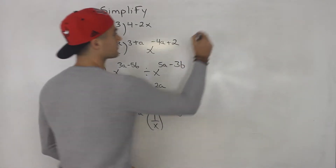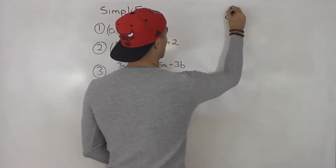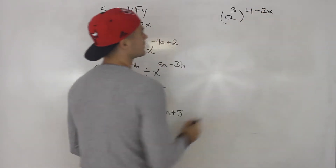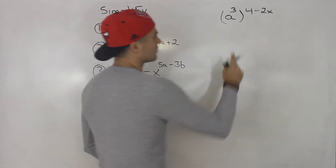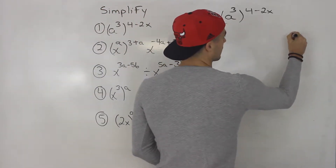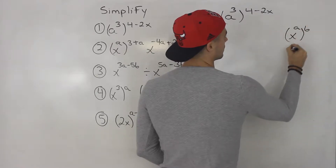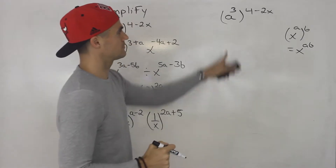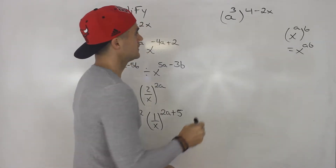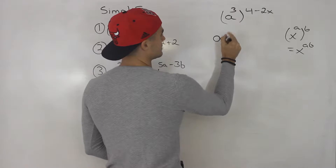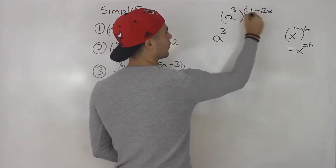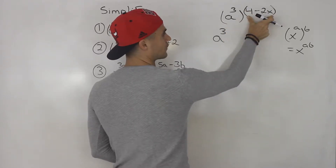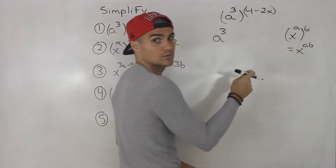Starting off with number one, we got a to the power of three, and then that is to the power of four minus two x. The rule that we use — the law — is basically multiply the exponents. This is in that format, so we would take a to the power of three and multiply it by that whole expression. Not just the four, but this whole thing is the exponent. So this whole expression is like the b value right there.